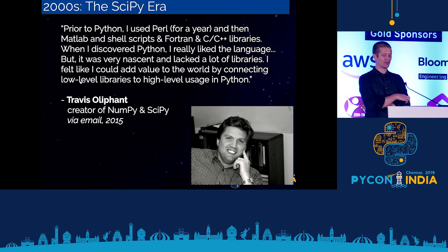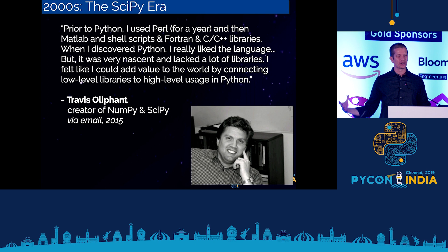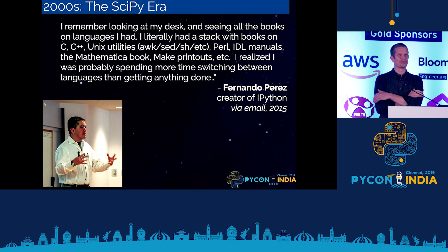Similarly, Travis Oliphant, who co-created NumPy and SciPy, said: prior to Python, I used Perl for a year, then MATLAB, then shell scripts, Fortran, and C++ libraries. When I discovered Python, I really liked the language, but it was very nascent and lacked lots of libraries. I felt I could add value to the world by connecting these low-level libraries together to high-level usage in Python. He had all these different tools and wanted Python to glue them together as one numerical workhorse.